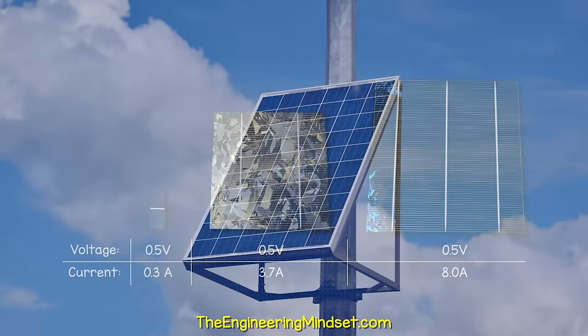Each of these cells generates just 0.5 volts, but the larger the cell, the more current it can generate.